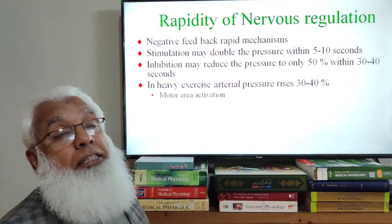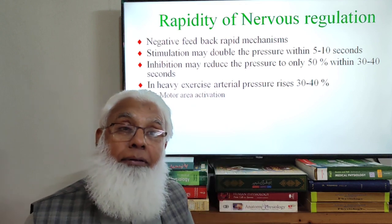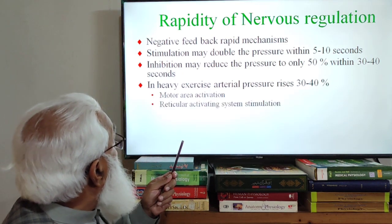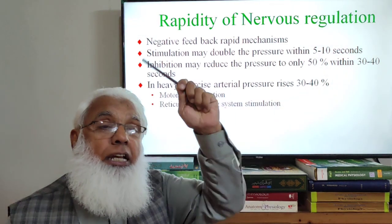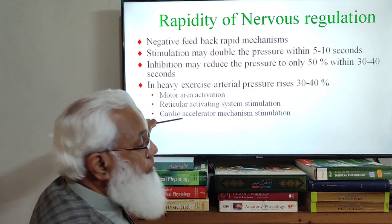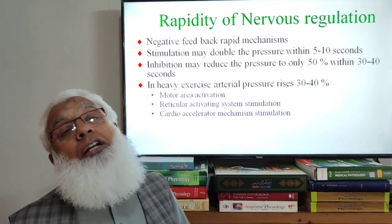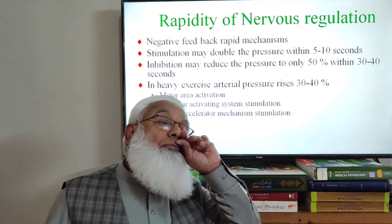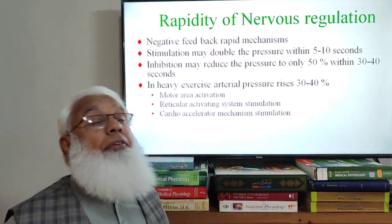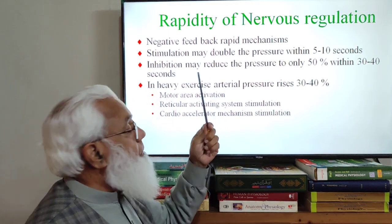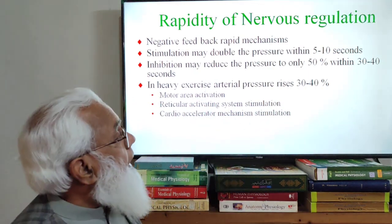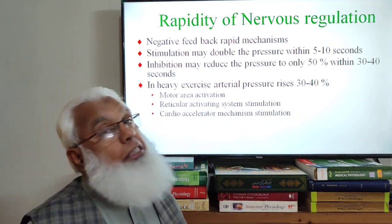During heavy exercise, the motor area is activated. Motor area activation and the reticular activating system send signals to the sympathetic system, including the cardio-accelerator mechanism. Signals are passed on to the vasomotor center, which we have discussed. From the motor system and reticular activating system there is vasomotor stimulation, guiding sympathetic system stimulation, which rapidly increases blood pressure.